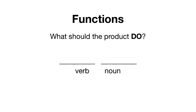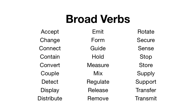First, let's talk about functions of our device or product. Think about what that product must do. List the functions in verb-noun form, where typically the noun is the object of the verb. When we list the functions of the device, it's important to use very broad verbs. Here are some examples of broad verbs. Each of these is open-ended and doesn't commit us to a specific means to achieve the broad function.